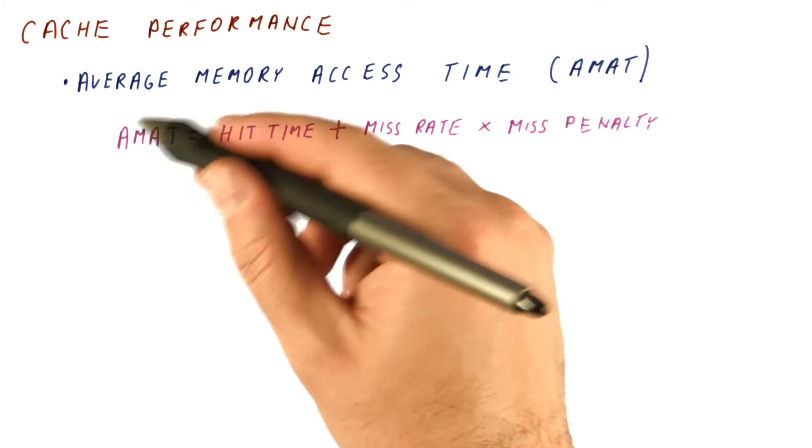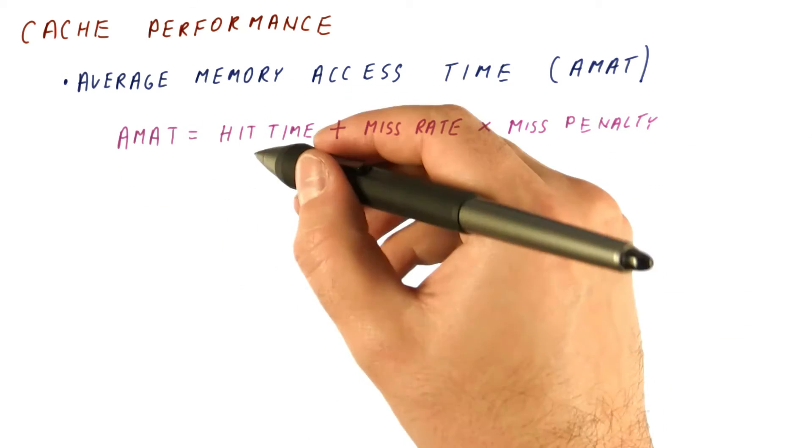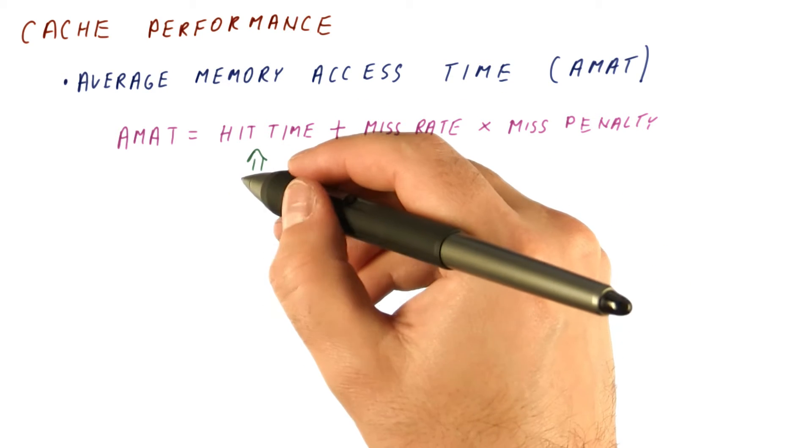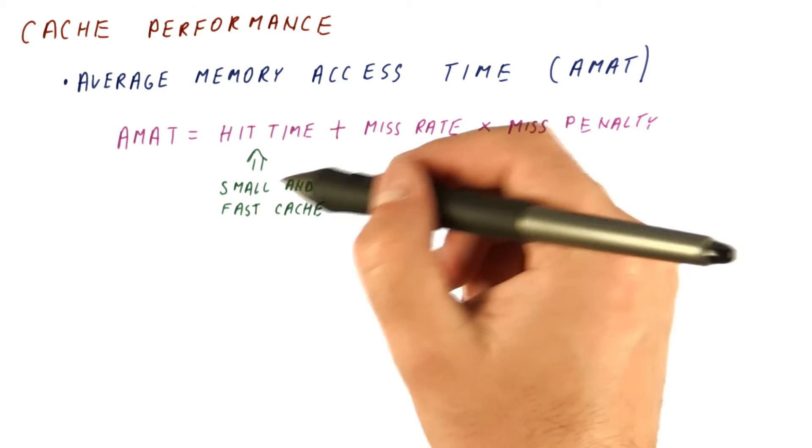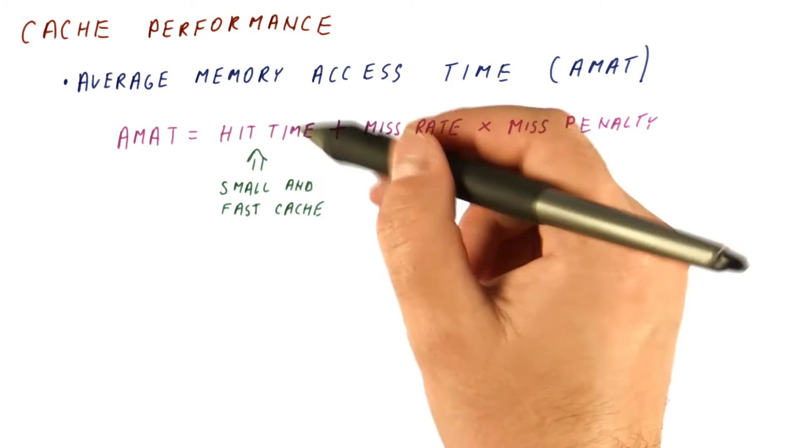We want the AMAT to be very low, the lower the better. This means that we want the hit time to be low, which means we want a small and fast cache, because that will contribute to having this low.